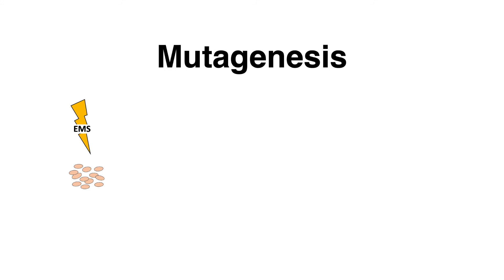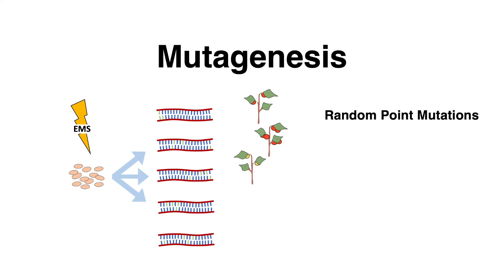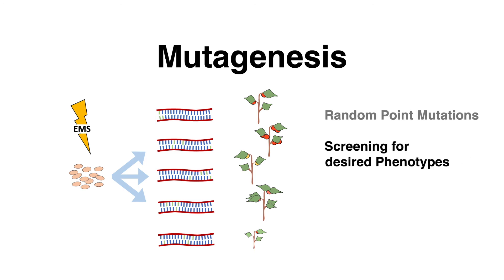Thousands of crop plant seeds are mutagenized with EMS, which results in random mutations. This creates a variety of different genomes with unique alterations. In the following plant generations, gene modifications lead to potential changes in the phenotype of plants. Now one can screen for the phenotype of interest and breed with this individual.